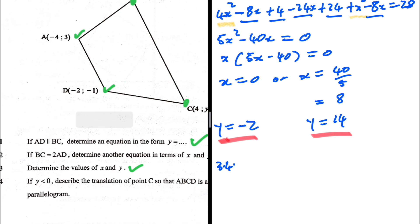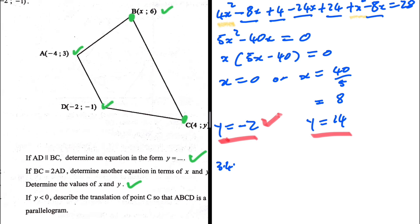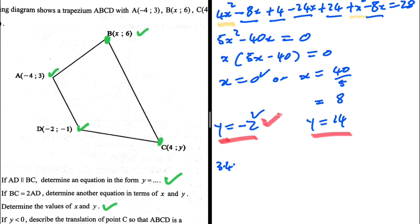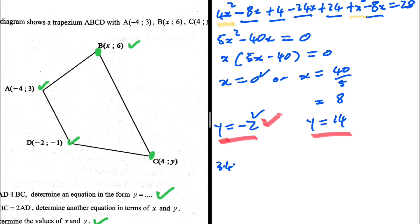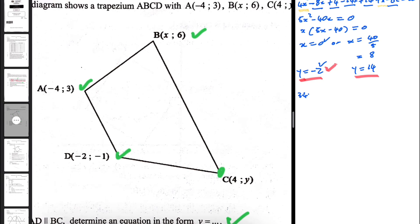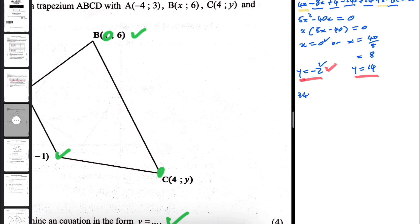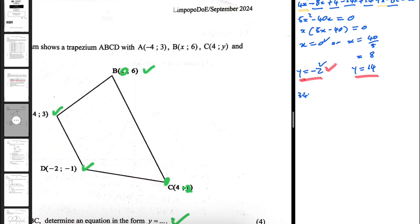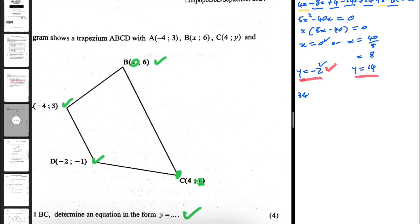For 3.4: if y is less than zero, we look at our two possible y-values — y = −2 and y = 14. Since y must be less than zero, we use x = 0 and y = −2. So the coordinates of B are (0, −2) — that's the solution we're interested in.